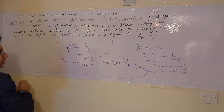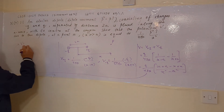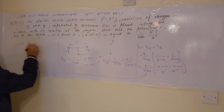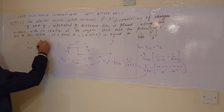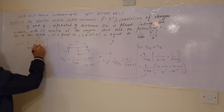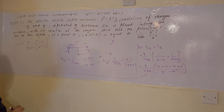After solving this expression, we get the final expression: V equals q upon 4 pi epsilon naught times 2a upon (x squared minus a squared).